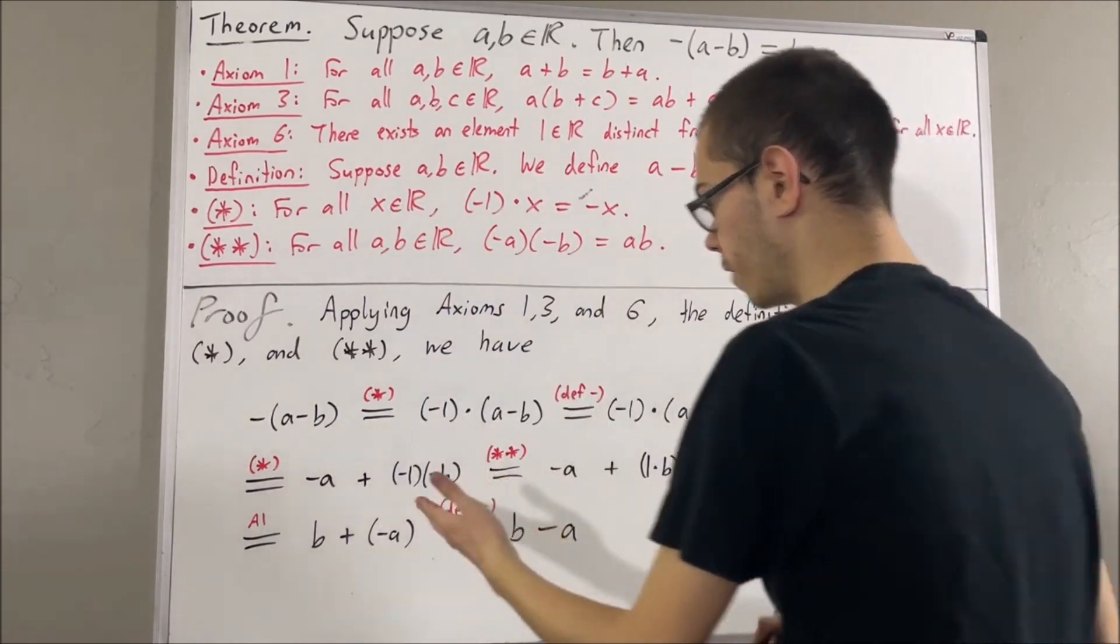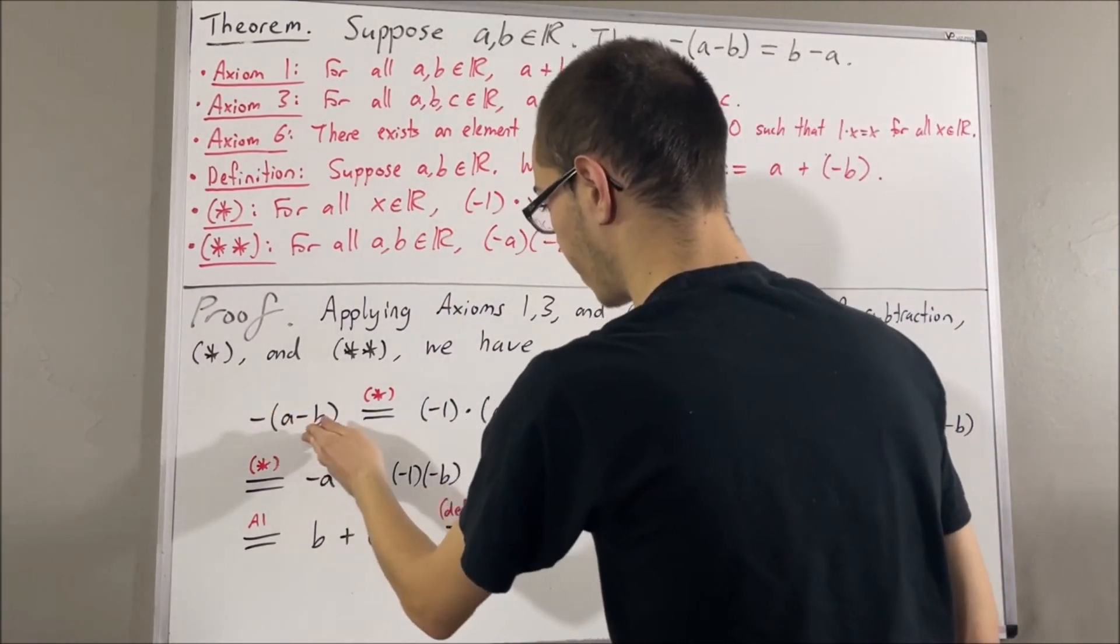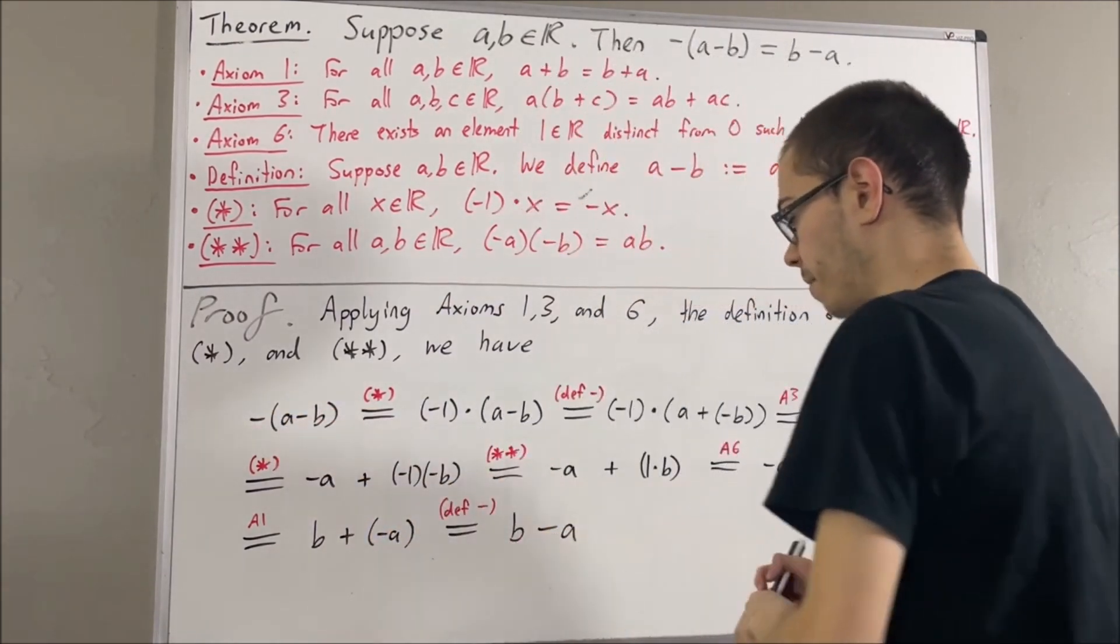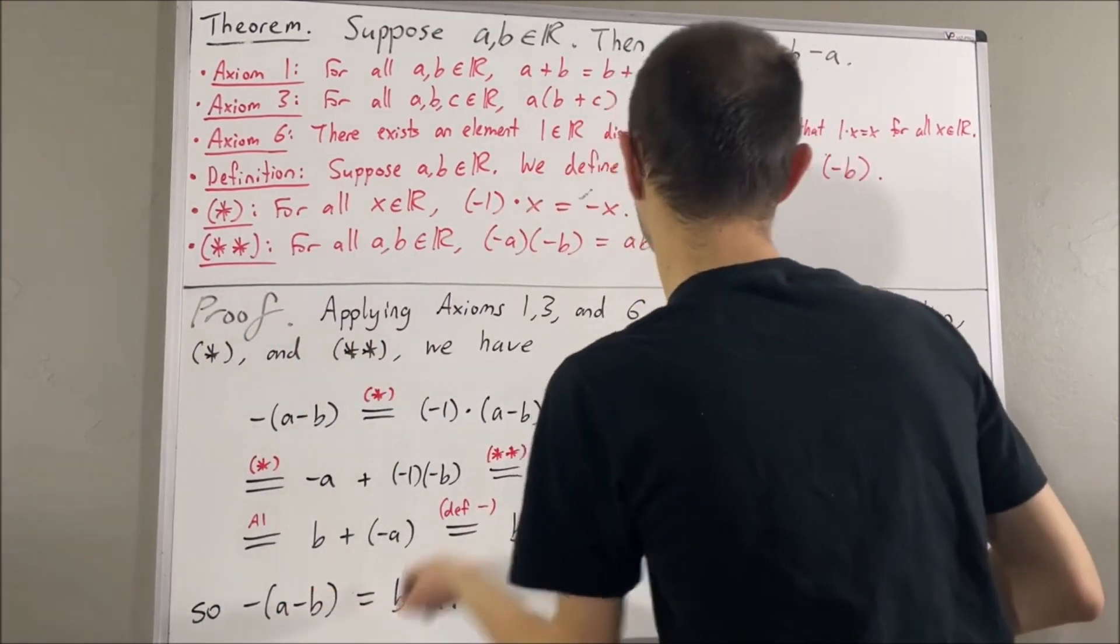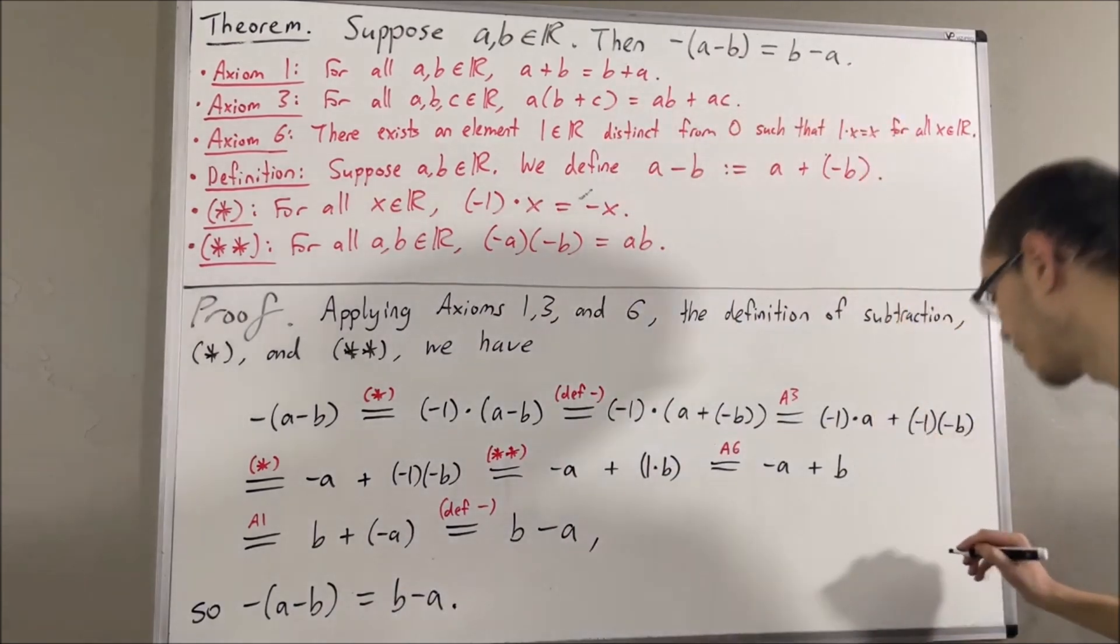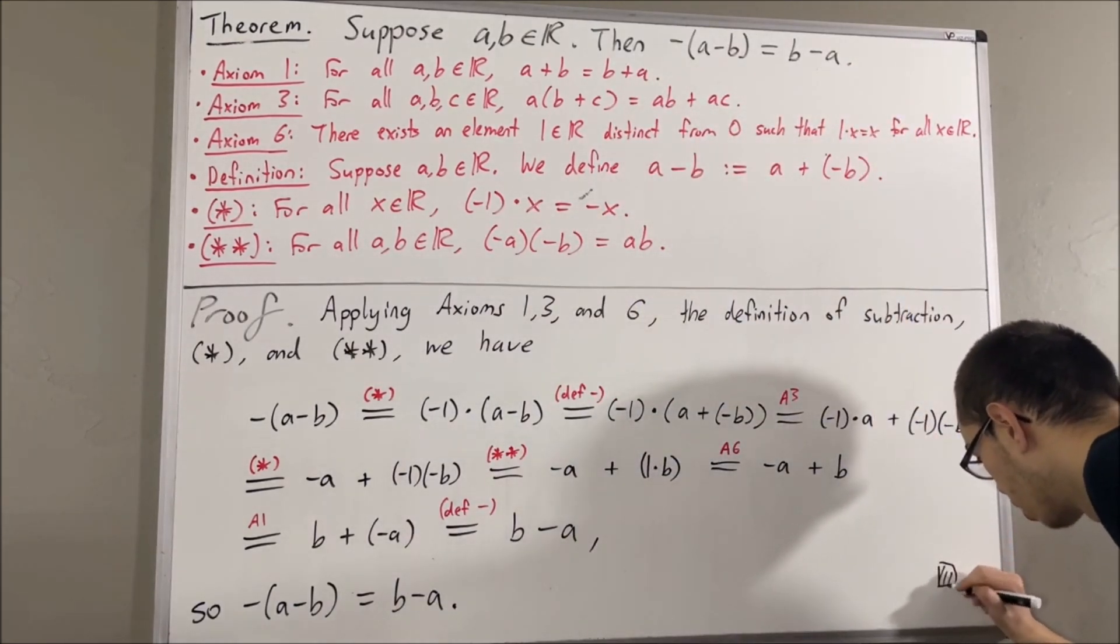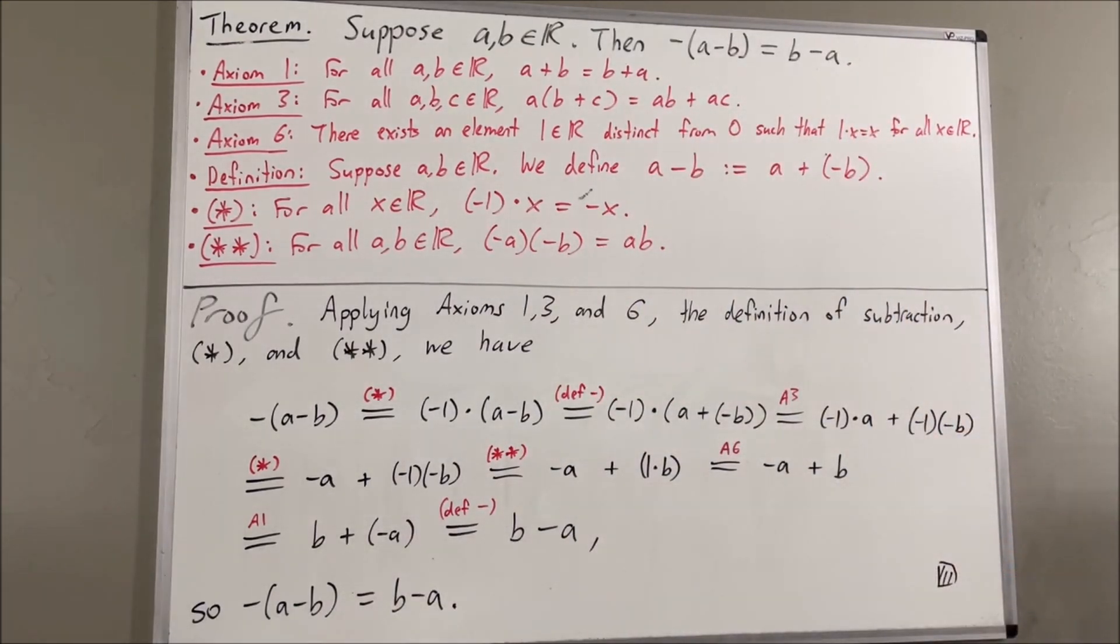And so, through this chain of equalities, we have shown the negative of a minus b is equal to b minus a. And that is exactly what we wanted to prove. So this completes the proof. And that's pretty much it for this video.